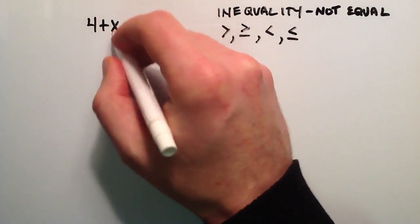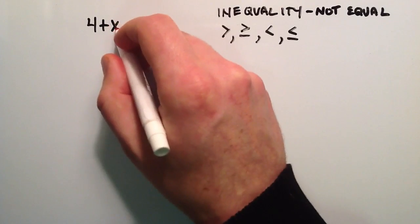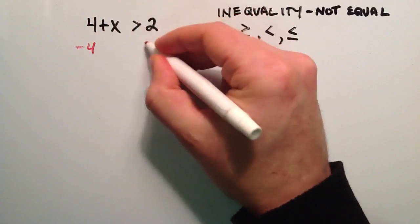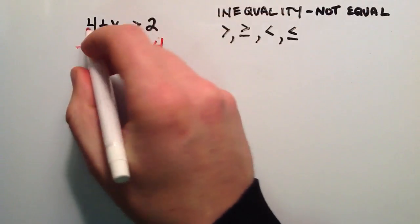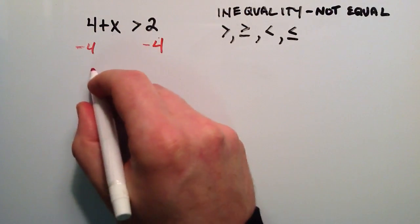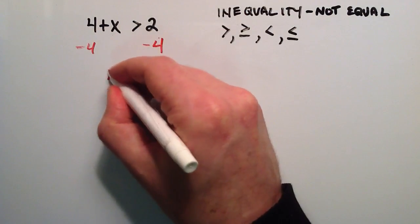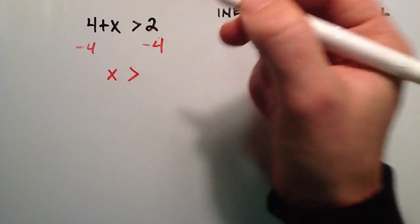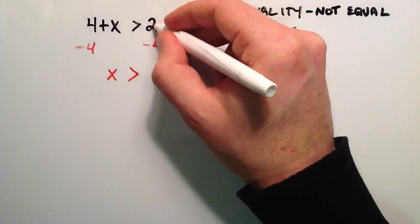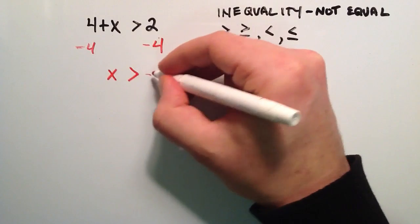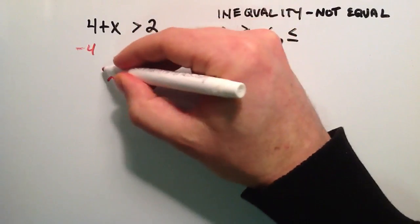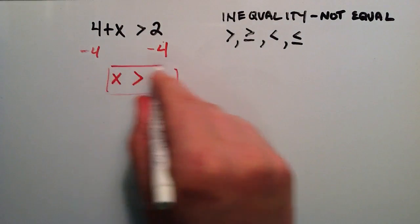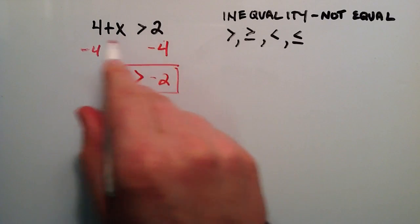Basically, what we're going to do is we want to get x by itself on one side. So we're just going to subtract 4 from each side in order to do that. 4 minus 4 gives us 0, which leaves us with just an x on the left-hand side. We rewrite the greater than symbol, and then 2 minus 4 gives us negative 2. So this is the answer to the single variable inequality.